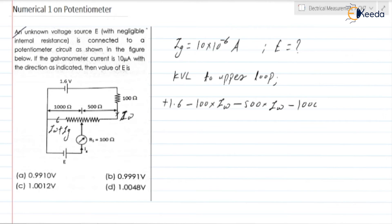Minus 1000 into Iw plus Ig is equal to 0. From this we can write Iw, because we know Ig. So we can find Iw. Iw is equal to 1.6 minus 1000 into Ig.